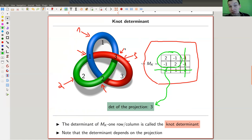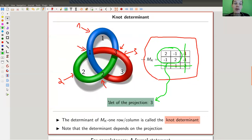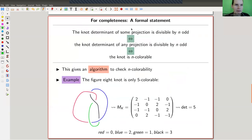And then the statement is actually pretty cool. A knot determined by some projection is divisible by n, so the knot determinant, if and only if it's divisible by n for any projection. So this definition a priori depends on the projection, but still you get this result that it's divisible if and only as for any projection. And it's if and only if the knot has a coloring. So you can now check algorithmically whether the knot has a coloring, and that's pretty cool.